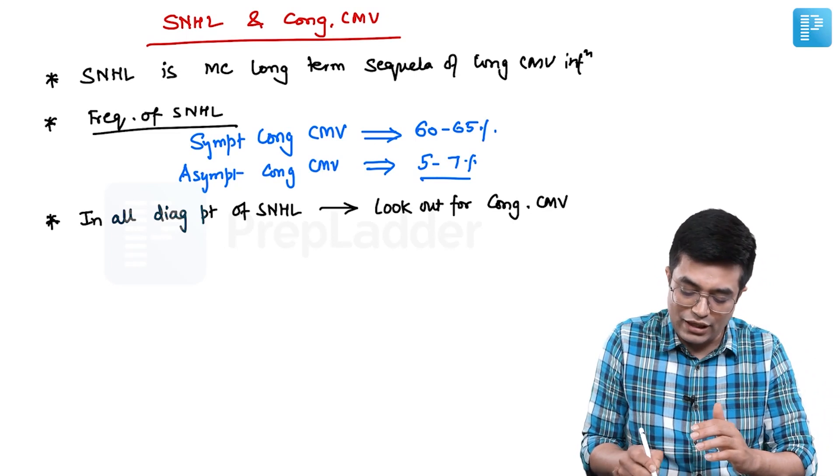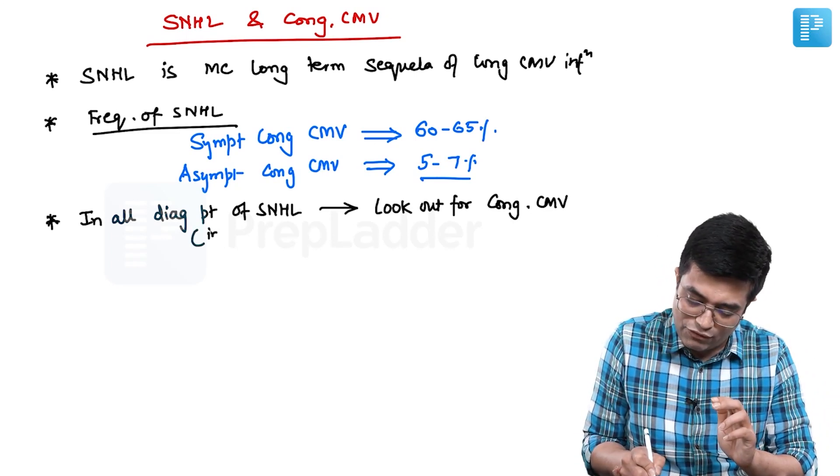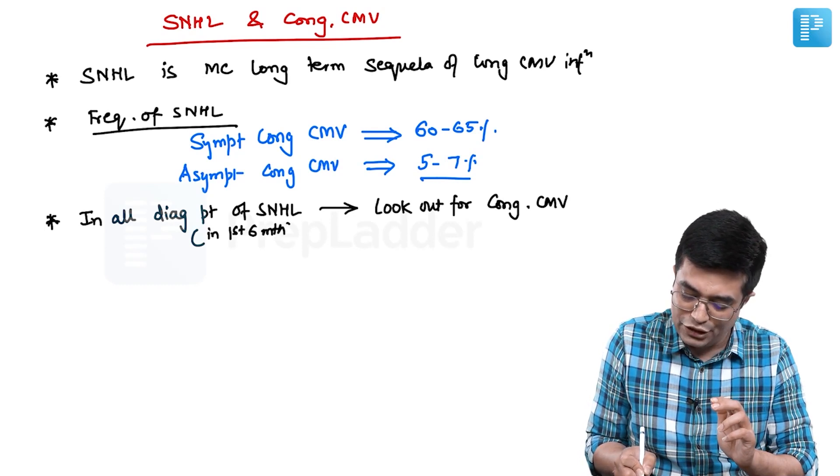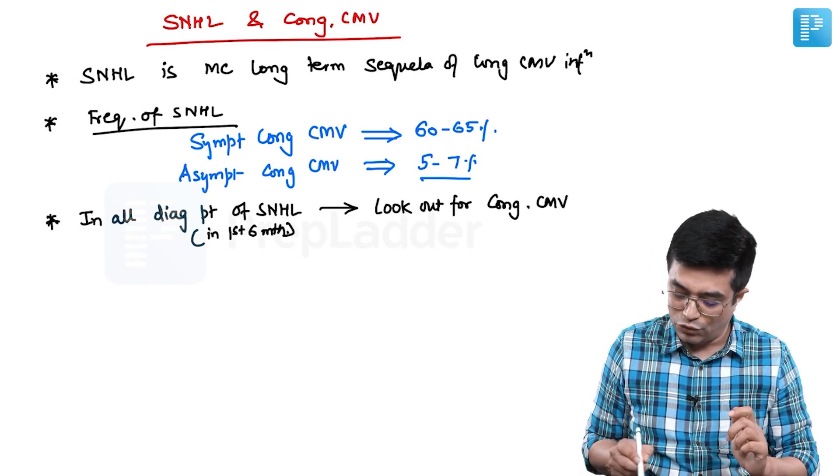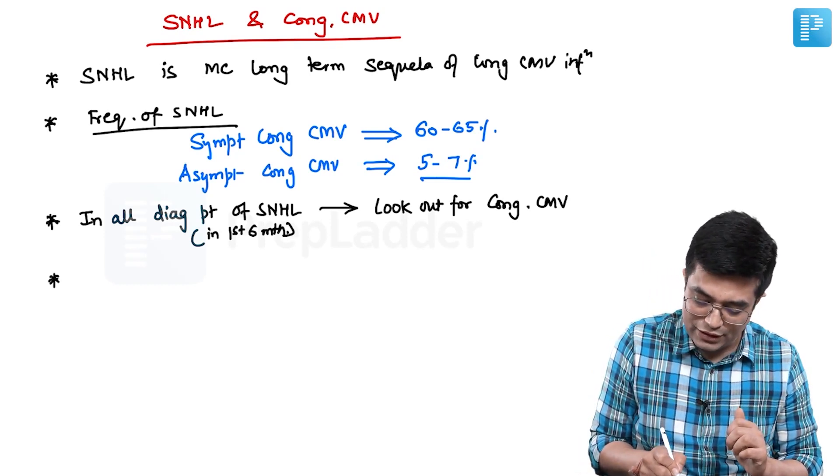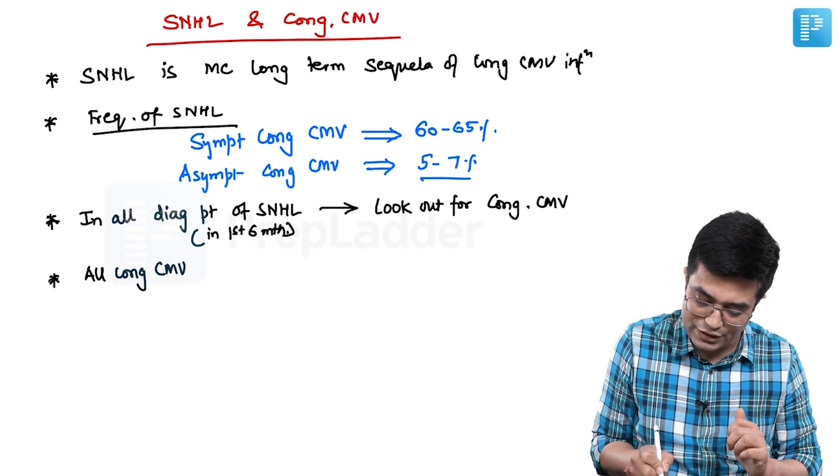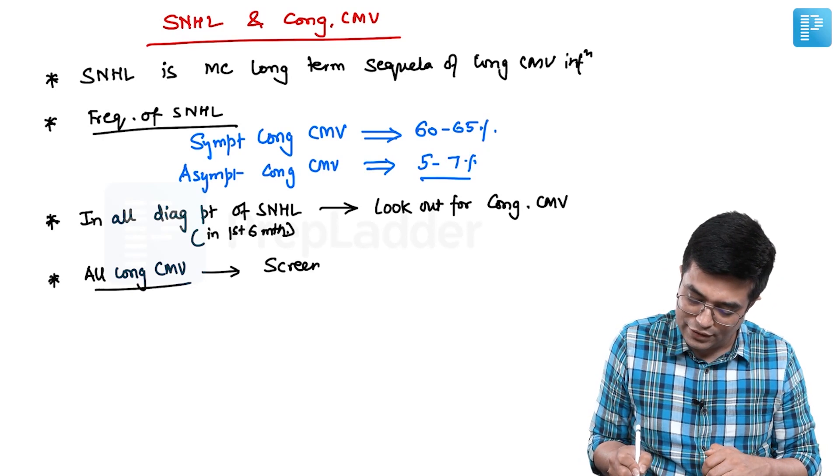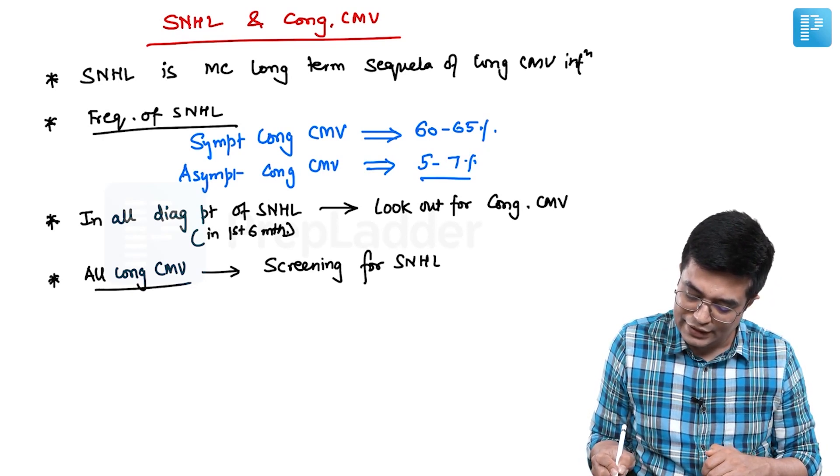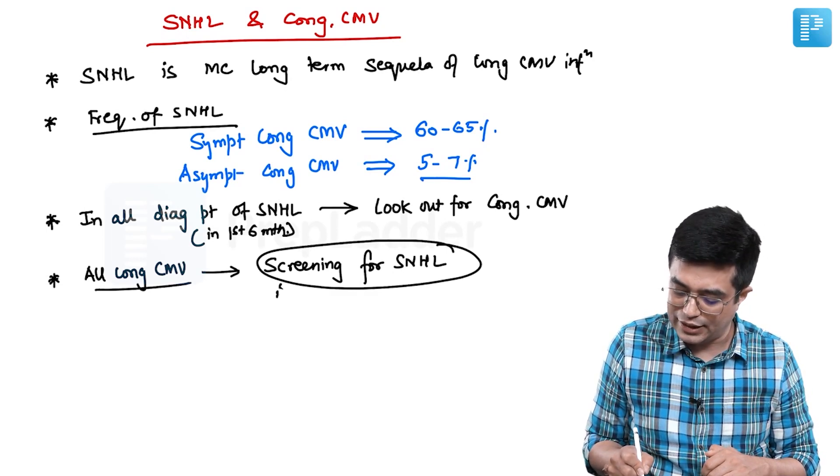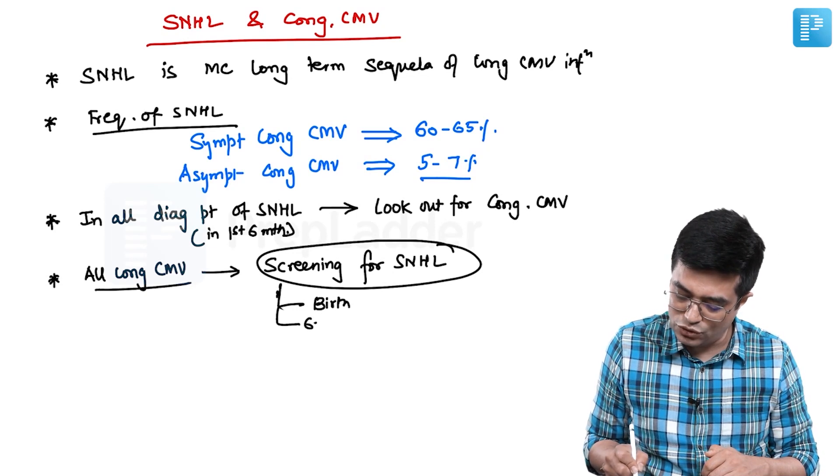When I say in all diagnosed patients of SNHL, you have to mention all patients presenting in first 6 months of SNHL - you should look out for congenital CMV infection. And the fourth thing that you should remember is that in patients with congenital CMV, in all congenital CMV patients, you should do screening for SNHL. This screening for SNHL should be done at the time of birth and then every 6 to 12 monthly